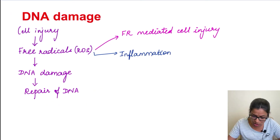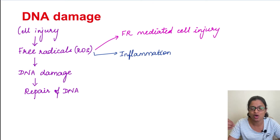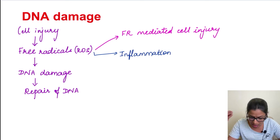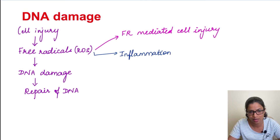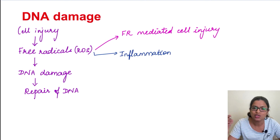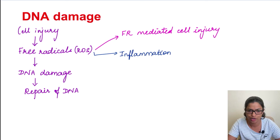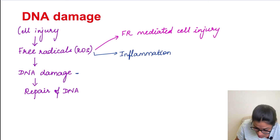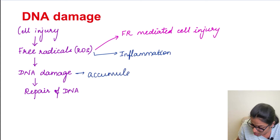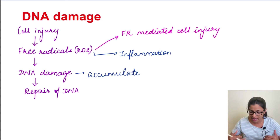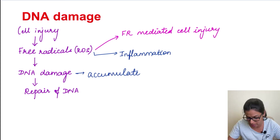Starting with DNA damage — we have already seen about the various causes of cell injury. In cell injury, we saw that there is production of free radicals, which are also called reactive oxygen species. These free radicals are going to cause DNA damage, apart from other cellular damage as well. When this DNA damage happens, it can be repaired till a certain point, but when it starts to accumulate over the years, the cell cannot function properly.